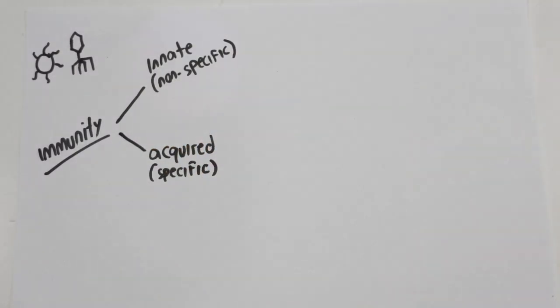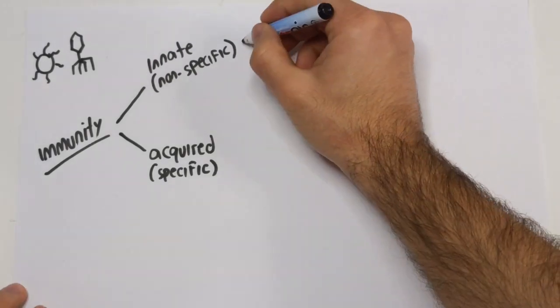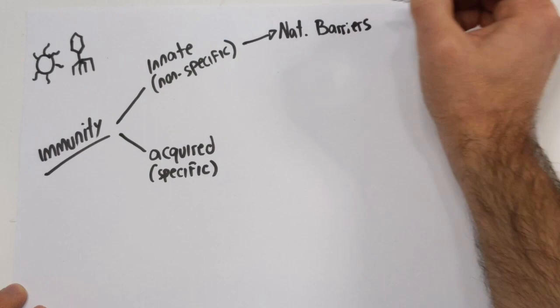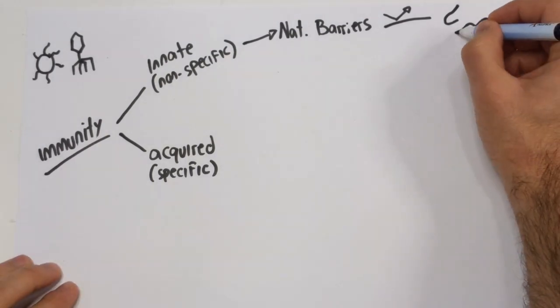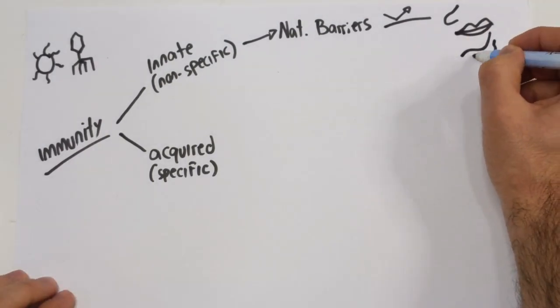As its name suggests, non-specific immunity involves strategies that defend us from all pathogens, not minding who they are. Our first line of defense against disease are the natural barriers. The most important is the skin that serves as a physical barrier. For pathogens that manage to avoid skin, we have special strategies like mucus in the nose and respiratory system, saliva in our mouth, acid in our stomach, and wax in our ear.